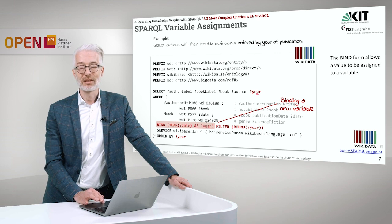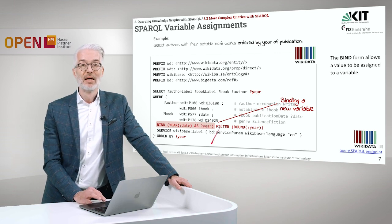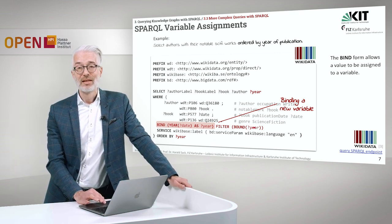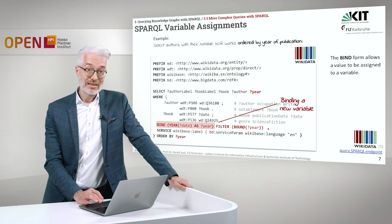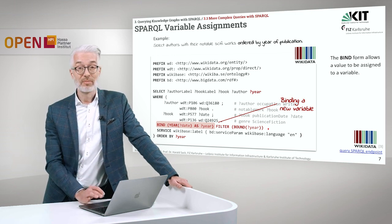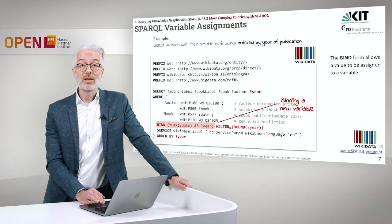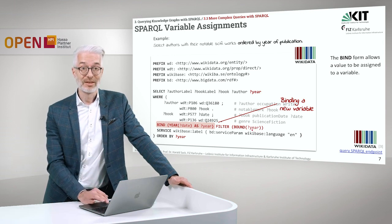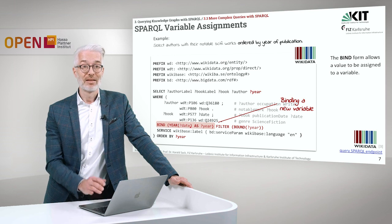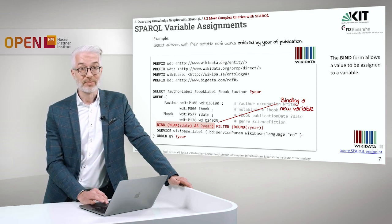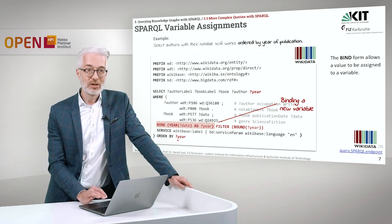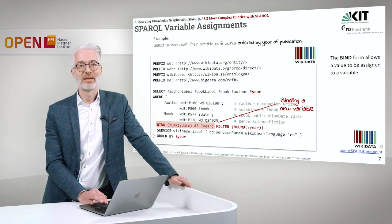Since we might also have non-valid date expressions where the year might become something strange, we only look at those that are really bound to a year — meaning where the year is successfully transformed from the date expression. What we do next of course is order the results, and we order simply by year.